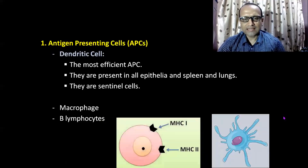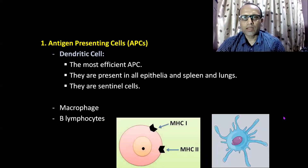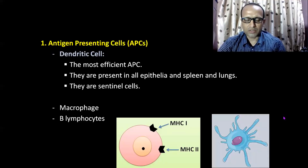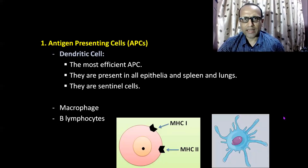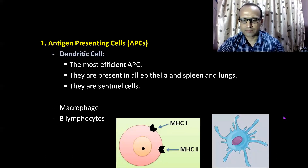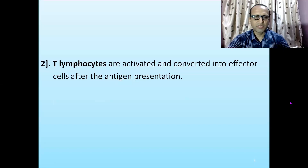Antigen-presenting cells have both MHC1 and MHC2. MHC stands for Major Histocompatibility Complex. Antigen-presenting cells have both MHC1 and MHC2, but all the other cells in our body have only MHC1. After antigen presentation, T-lymphocytes are activated and they are converted into effector cells.